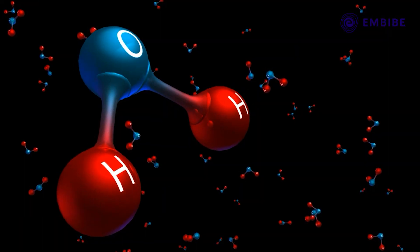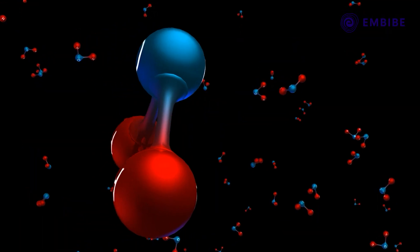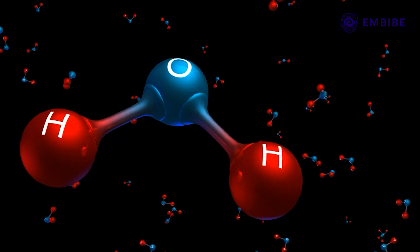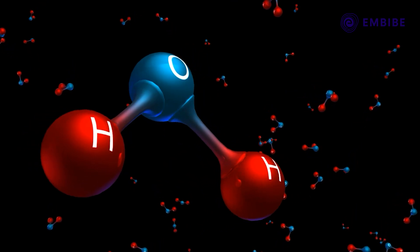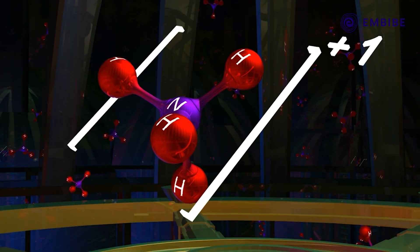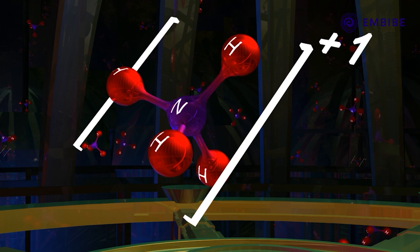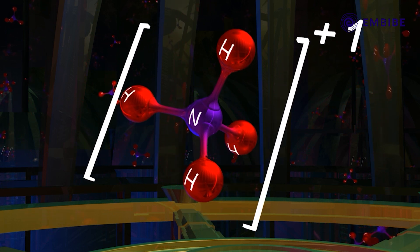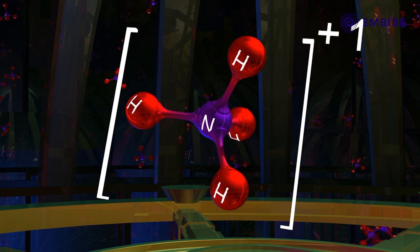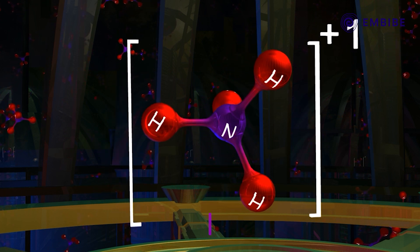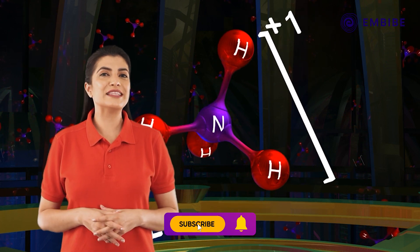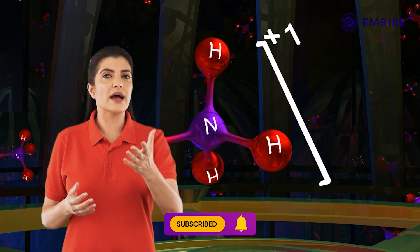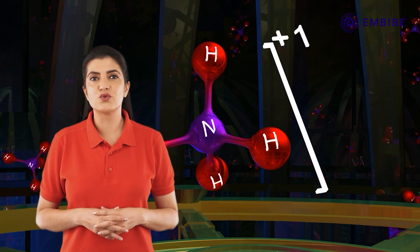Rule six: the sum of the oxidation numbers of all the elements in a neutral molecule is zero. Rule seven: the sum of the oxidation numbers of all the elements in a polyatomic ion is equal to its electric charge. Let us calculate the oxidation numbers of some elements to understand these rules better.